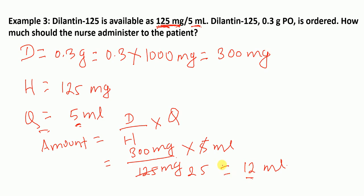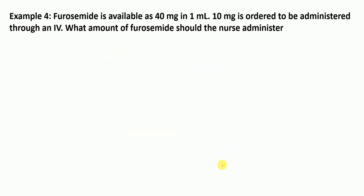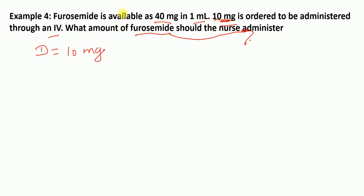The next example: furosemide is available as 40 mg in 1 mL. 10 mg is ordered to be administered through IV. What amount of furosemide should the nurse administer? The amount desired (D) is 10 mg — that is the ordered amount. The amount on hand (H) is 40 mg. The quantity Q is 1 mL, because 40 mg is available per 1 mL.